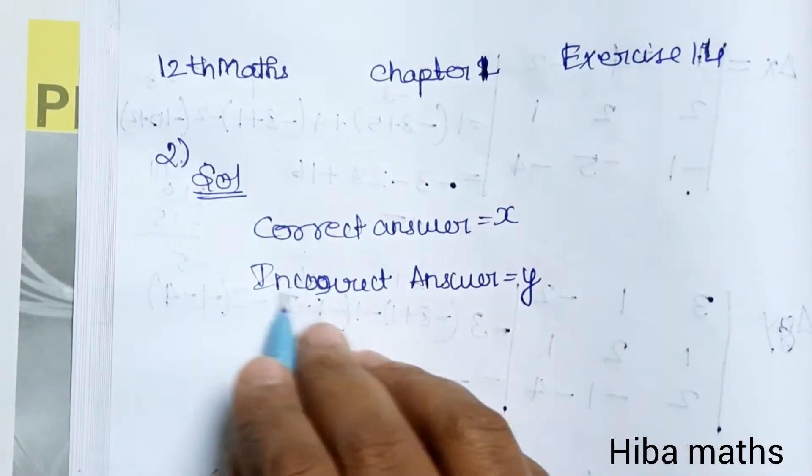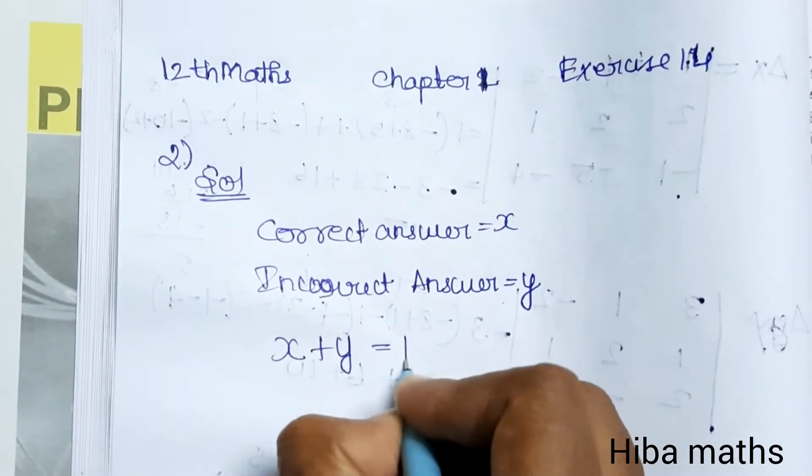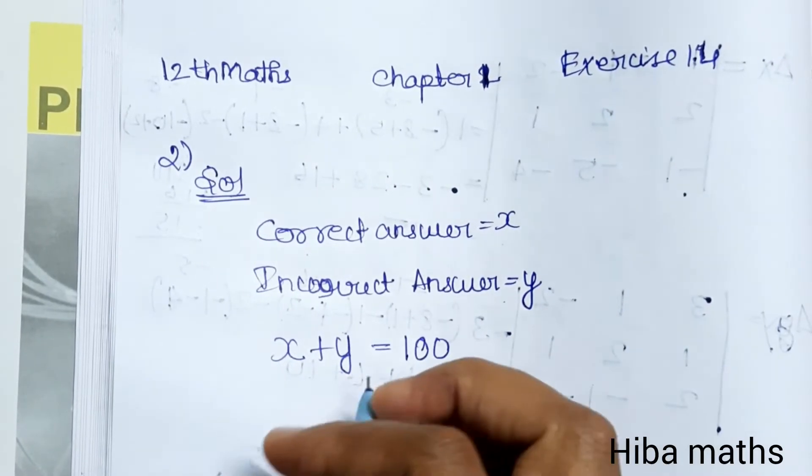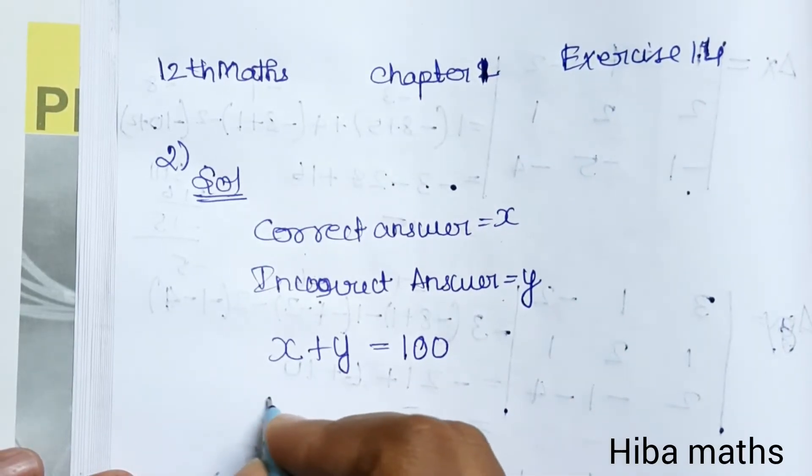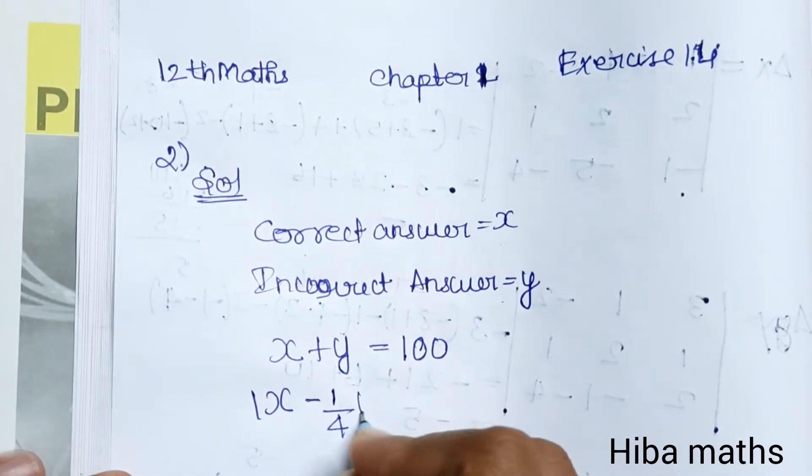Let correct answers = x and incorrect answers = y. We have: correct answer + incorrect answer = 100 questions. For the marks equation: correct answer gives 1 mark and wrong answer gives -1/4 mark.